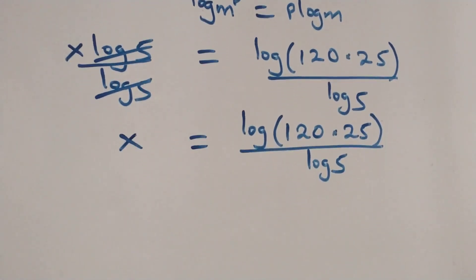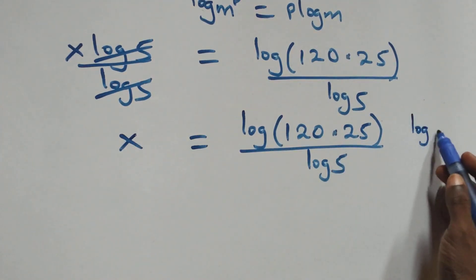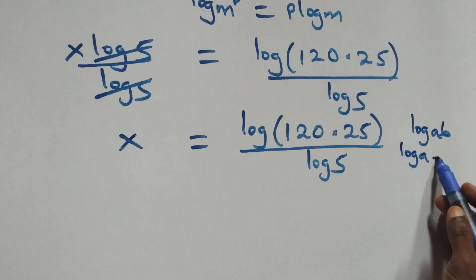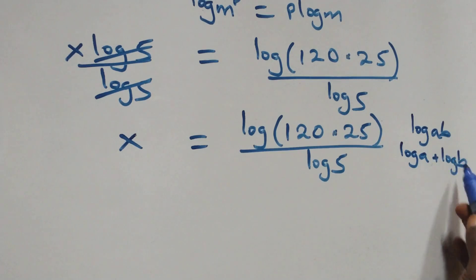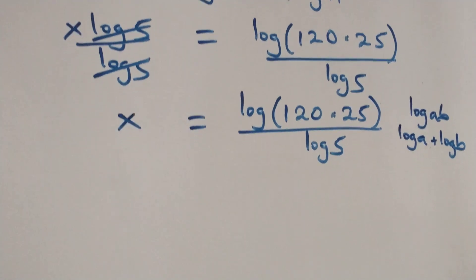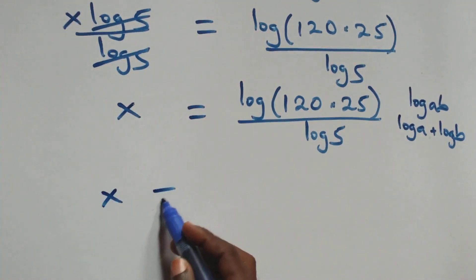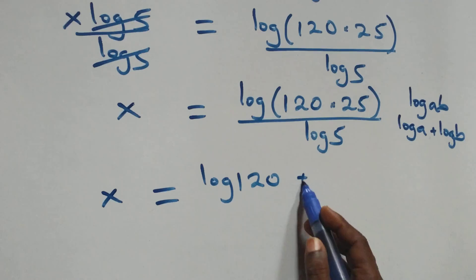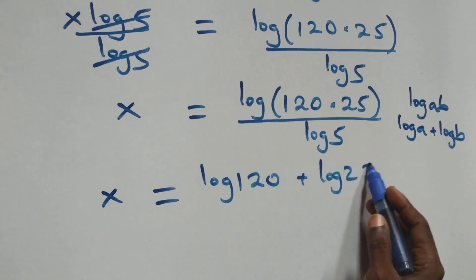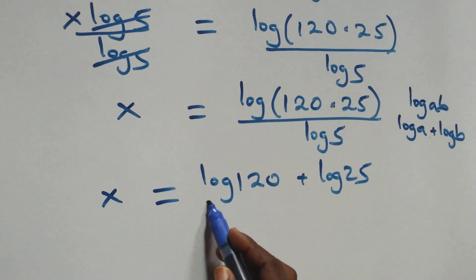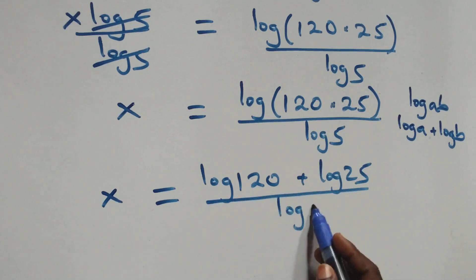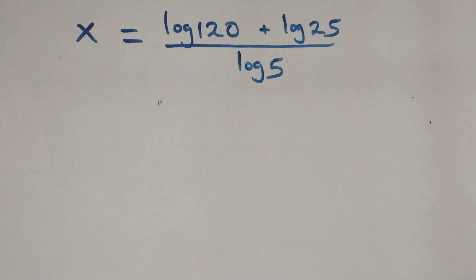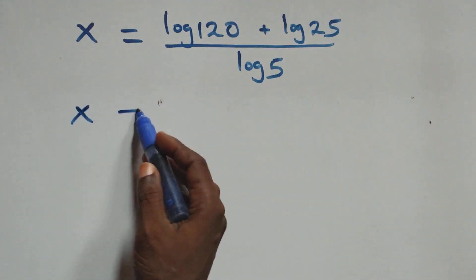Then from here this follows the law of logarithm: log of a times b is the same thing as log a plus log b. At this here we have x equals to log 120 plus log 25, all over log 5. Then the next step here we separate this into two fractions.